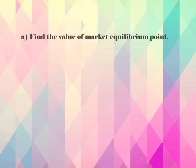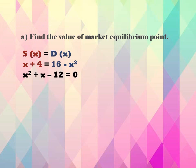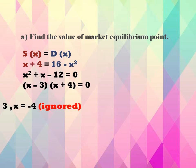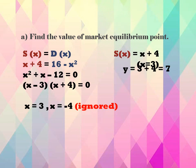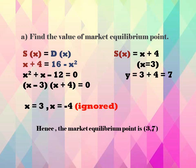Part A: find the value of the market equilibrium point. Setting DX equal to SX gives the quadratic equation X squared plus X minus 12 equals 0. Factorizing the equation gives X equals 3 and X equals negative 4. Ignore negative 4 because there is no negative value in the market equilibrium point. Then substitute X equals 3 into SX equals X plus 4 to get Y equals 7. Hence, the market equilibrium point is (3, 7).